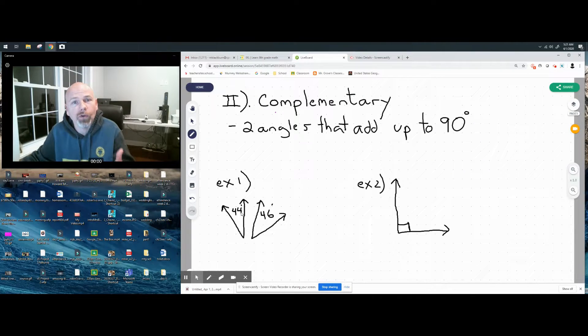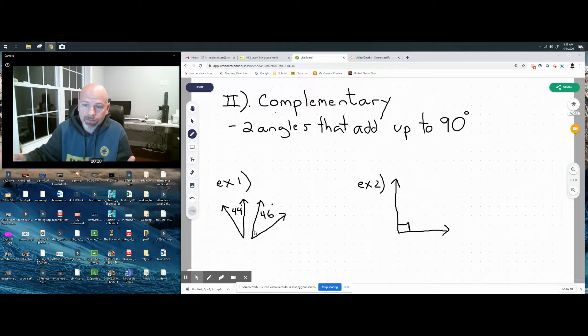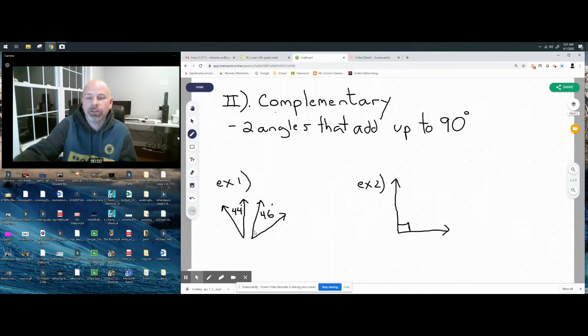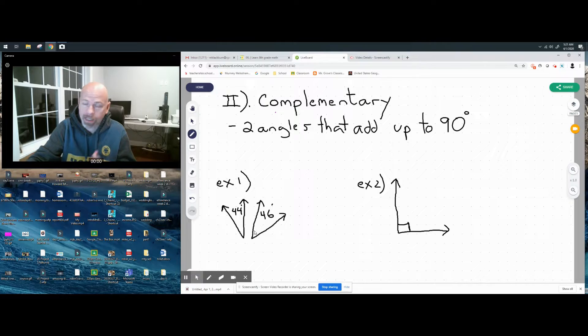When you put them together, they will ultimately look like example two. But let's look at example one. We have these two angles: one is 44 degrees, one is 46 degrees. We can see if we add them, 44 plus 46 equals 90, so those are complementary. They don't have to be touching - they could be, but they don't have to be.